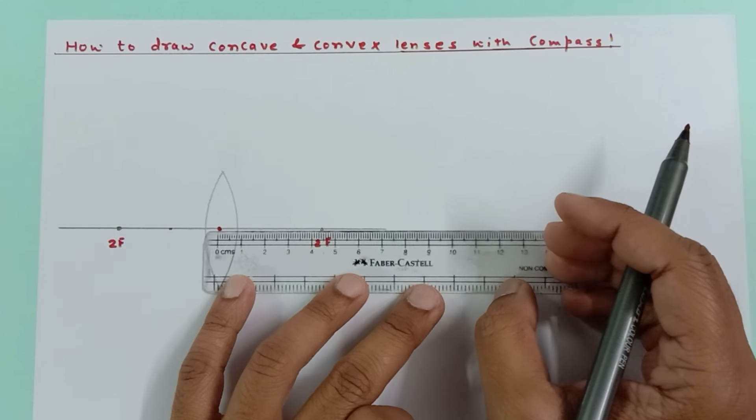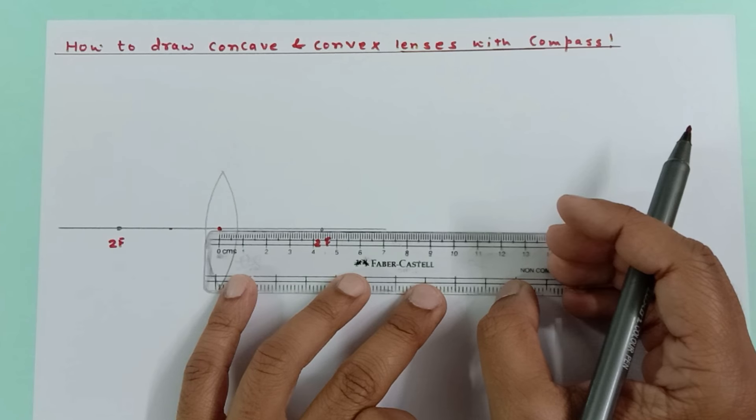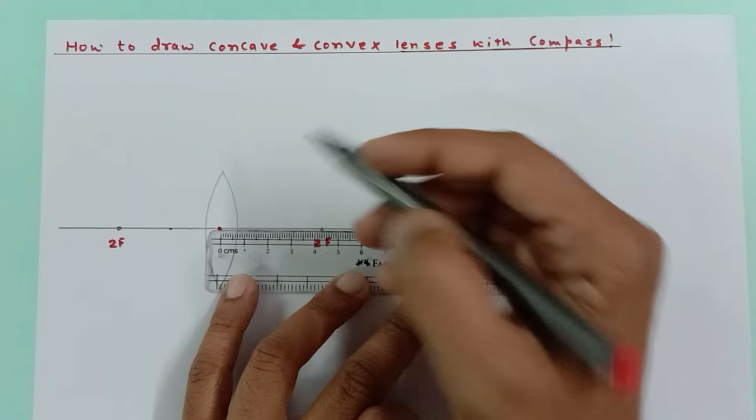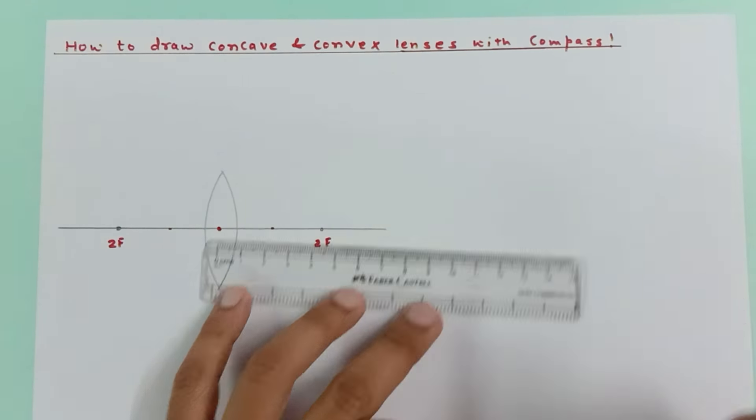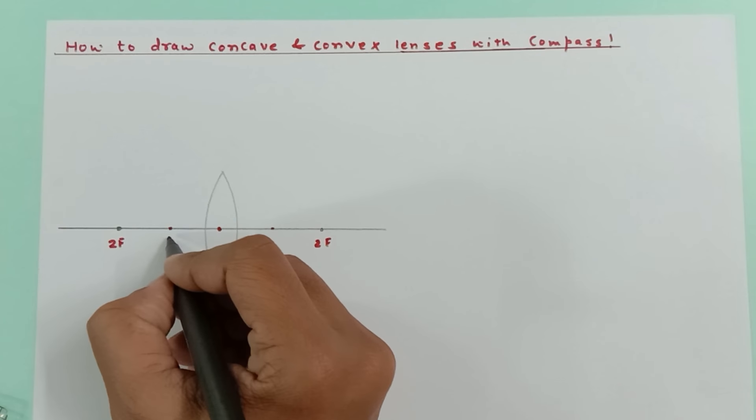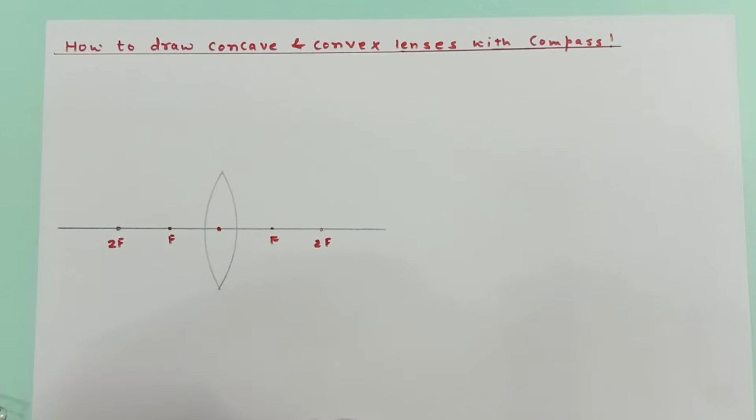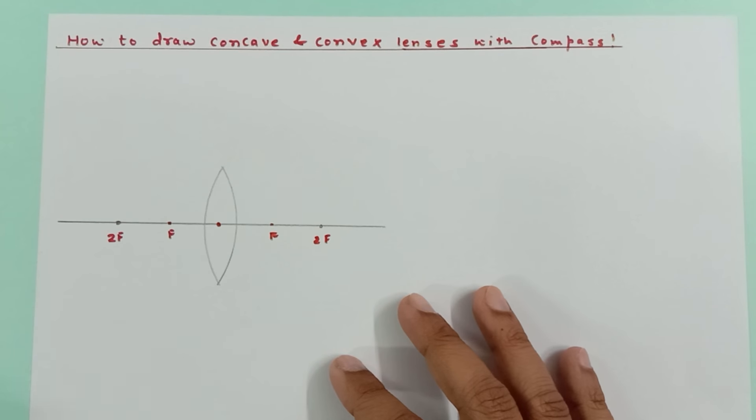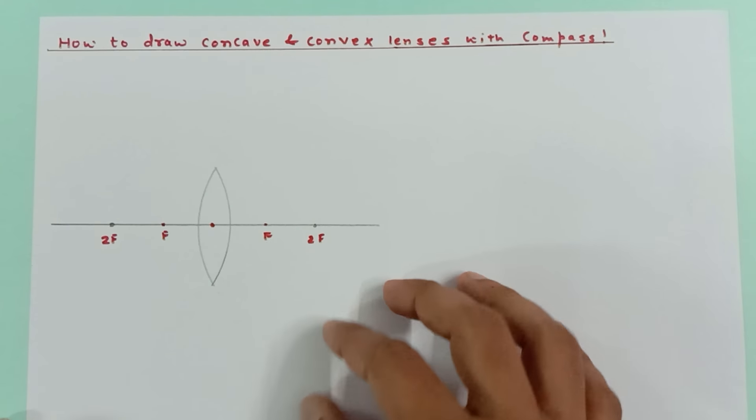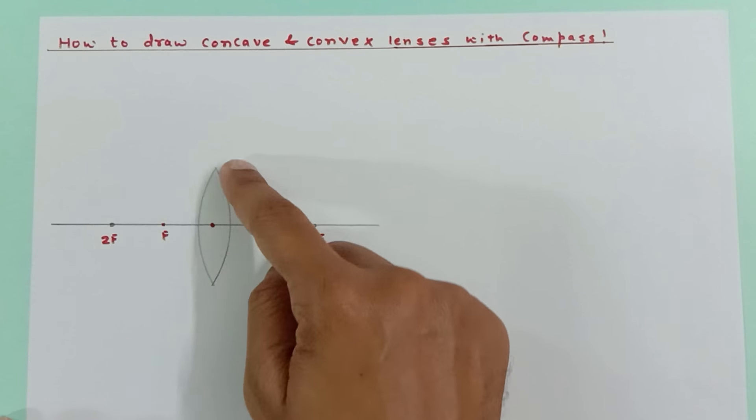Again, over here this distance is 4.3 again, so 2.1 approximately - this point is F. Again, this point is F, and you have marked all the distances perfectly. People, you cannot just make a lens and keep F and 2F anywhere.